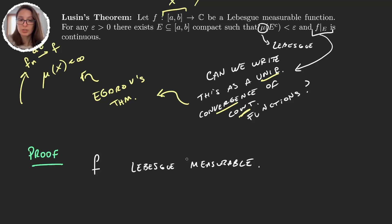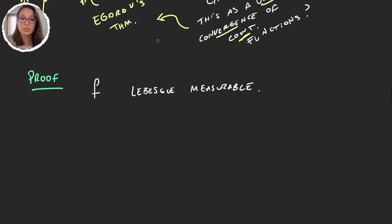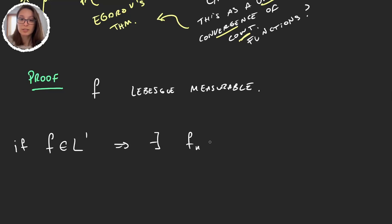Well, not in this much generality — having just Lebesgue measurability is not enough. But our function is defined on a compact set, and that gives us better properties. Let's assume f is in L1. We know that if f is in L1, we can always build the sequence we want, because continuous functions are dense in L1. So if my function is in L1, then there exists a sequence of continuous functions f_n that converge to f in L1.